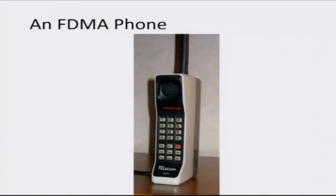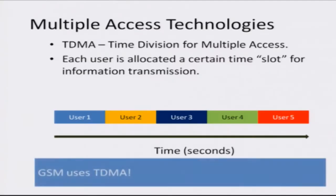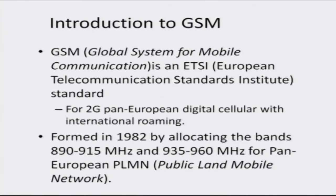FDMA forms the basis of the first generation, or 1G, mobile technology which was prevalent in the early 1980s. Some of you might remember seeing the bulky cell phones from that era which belonged to the first generation wireless technology. GSM and other dominant standards belong to what is known as TDMA, or Time Division Multiple Access, which forms the second generation of wireless communication technologies. In TDMA, users share the same frequency band but are allocated different time slots during which they can transmit.